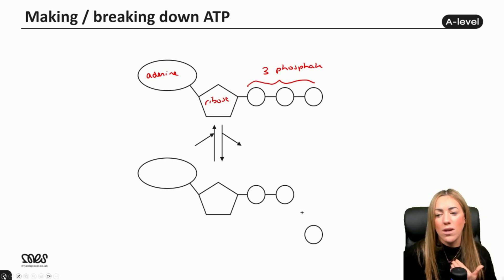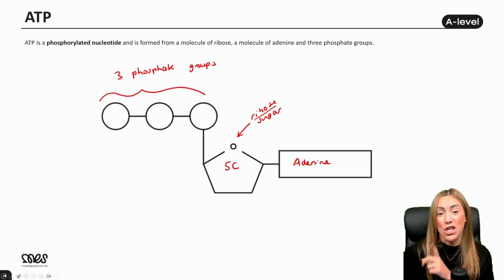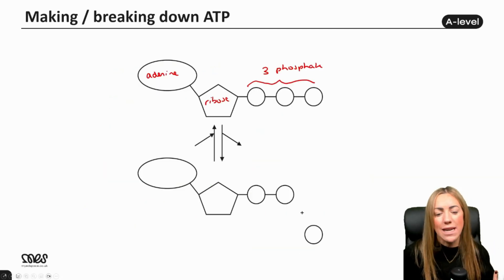Just to warn you, if you are doing OCR biology, you have to draw it with the three phosphate groups on the left, attached to the ribose sugar by a vertical line, and then the adenine has to be on the right with a horizontal line. So OCR are really particular about how you draw your ATP, but AQA don't mind if you flip it or your bond angles.